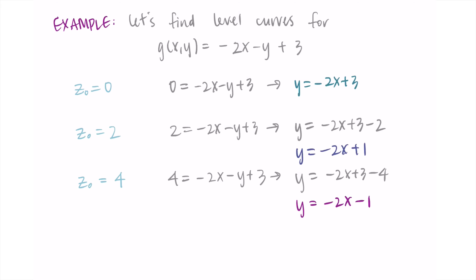A comment: looking at g of x, y I can see this is going to be a plane. We've talked about planes previously — this has a number times x, a number times y, and a z value hidden in g of x, y, plus a constant. With no squares or higher powers, this is a plane. The level curves actually reinforce this: when you draw them you see there's no curvature happening.